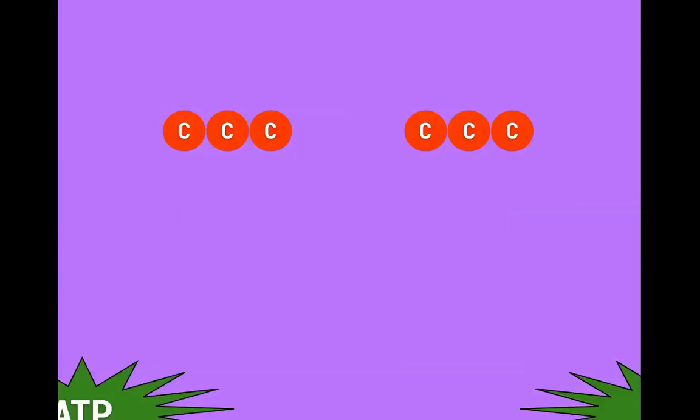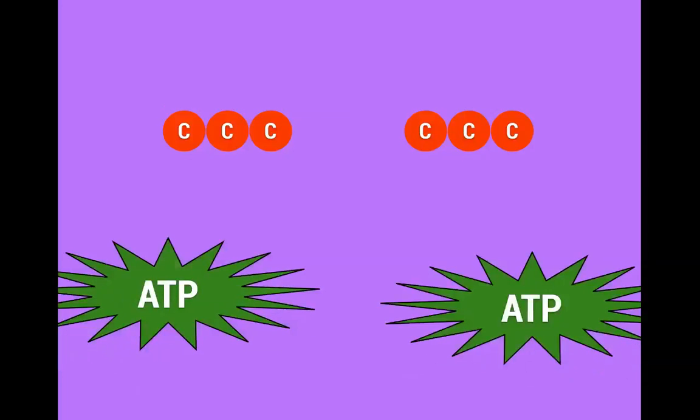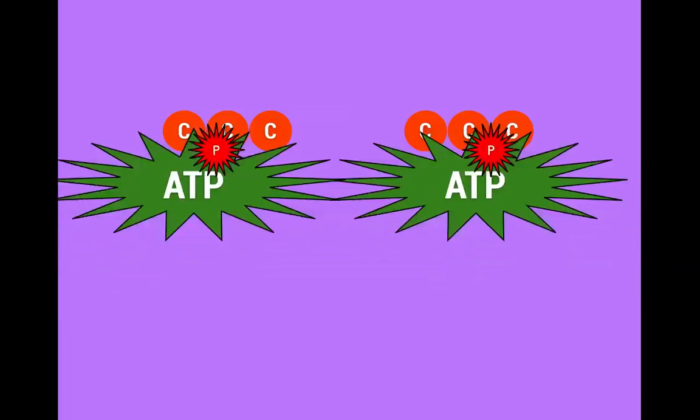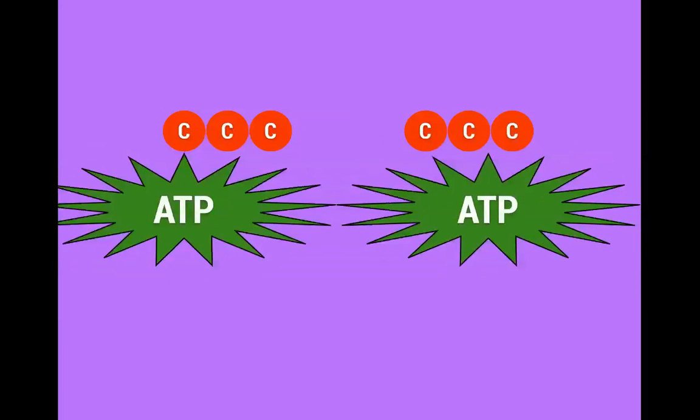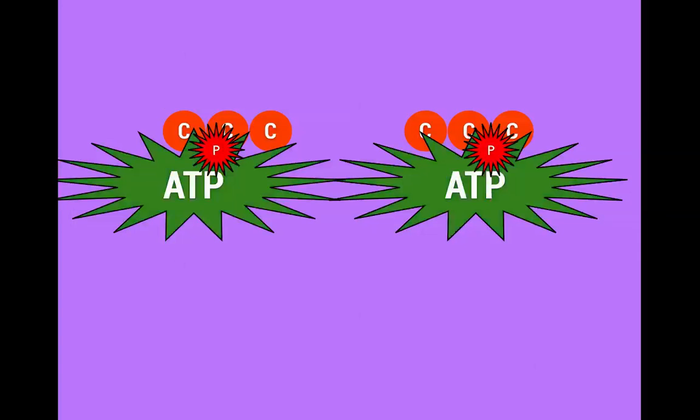The next thing that happens is the ATP comes in from that light-dependent part that we learned about in the last video. And the ATP hits, and when it hits, you notice it's giving off its P. That's not a euphemism. It's giving off its P and it turns into ADP. It goes from ATP and turns into ADP because it has given off its P.